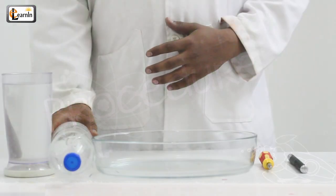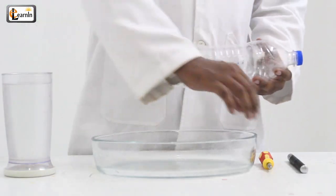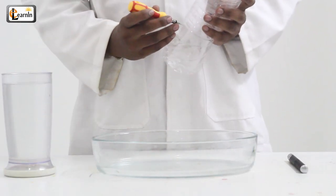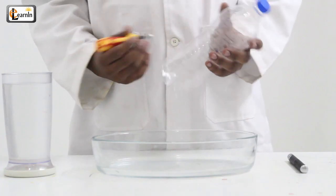Take the empty water bottle and punch a hole on the surface of the water bottle. Make sure that the hole is made in or around the midway of the bottle.